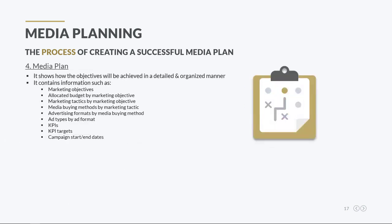Once the tactics are chosen, the next step is to create a media plan, which covers how the marketing objectives will be achieved in a detailed and organized manner. A successful media plan should contain information such as marketing objectives, allocated budget by marketing objective, marketing tactics by marketing objective, media buying methods by marketing tactic, the ideal advertising formats by media buying method, the creative types by ad format, the KPIs by marketing objective, as well as other details such as KPI targets and campaign timings.